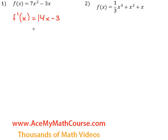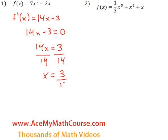Okay, so we need to make this equal to 0. So 14x is going to be equal to positive 3 after I add 3 to both sides of the equation. Then we can divide both sides by 14 and we have one critical number at 3 over 14 for the first function.